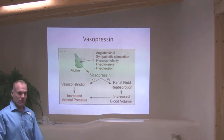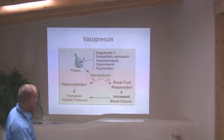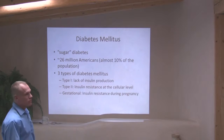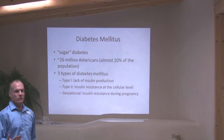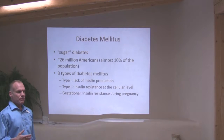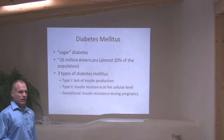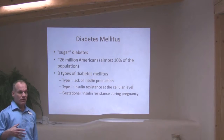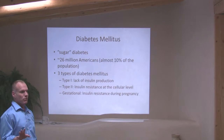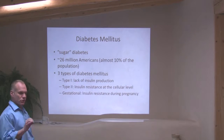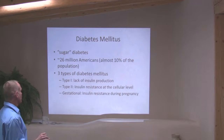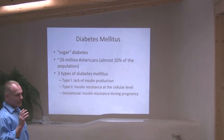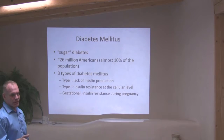Diabetes insipidus — don't worry about it, you're never going to see it again. But it's interesting when patients say 'I have sugar diabetes' — they understand there's more than one type. Sugar diabetes is diabetes mellitus. Ten percent of the population has diabetes.